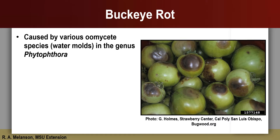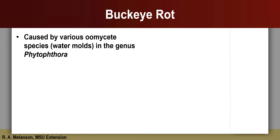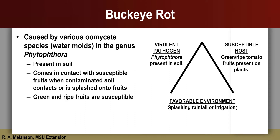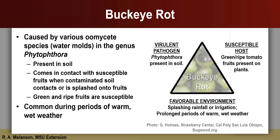Buckeye rot is a disease of tomato fruits caused by oomycete species in the genus Phytophthora. Oomycetes are fungal-like organisms that are commonly called water molds. The Phytophthora species that cause buckeye rot in tomatoes are present in the soil. These pathogens come in contact with susceptible fruits when contaminated soil is splashed onto fruit by rain or overhead irrigation. When favorable environmental conditions are present, these pathogens can infect both green and ripe fruits and cause disease.